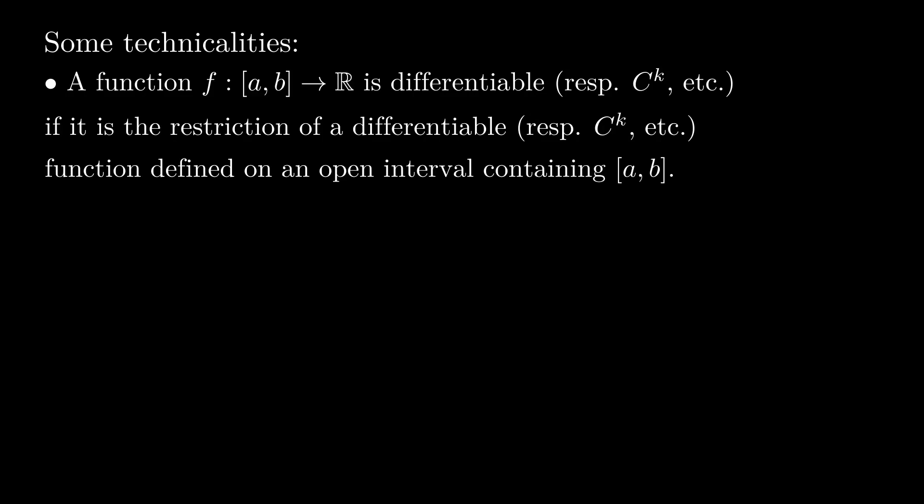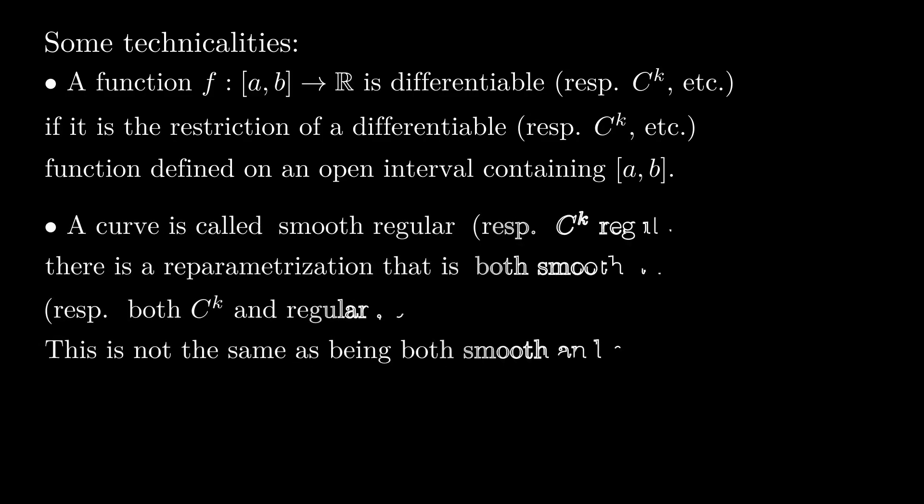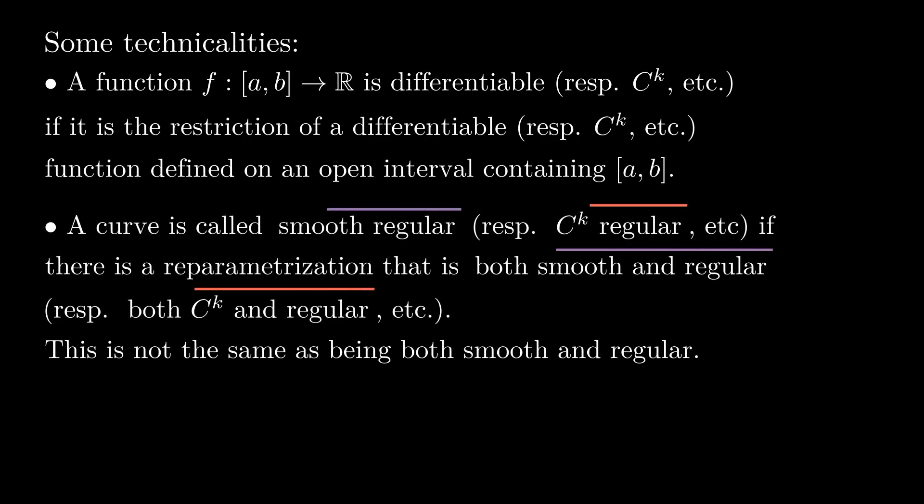Finally, we say that a curve is smooth regular if it has a parametrization that is both smooth and regular. This is not the same as being both smooth and regular separately. Here is an example of a curve that is both smooth and regular, but fails to be smooth regular.